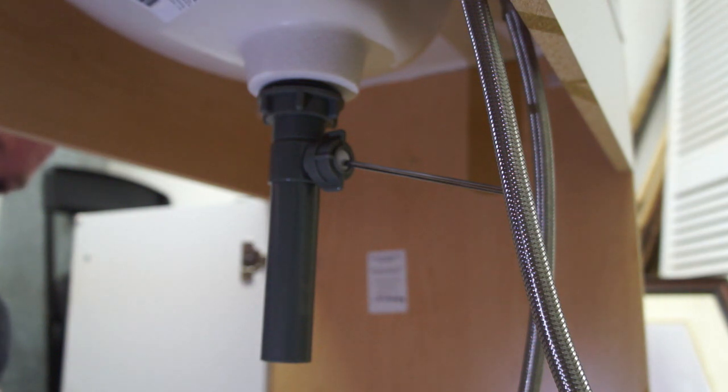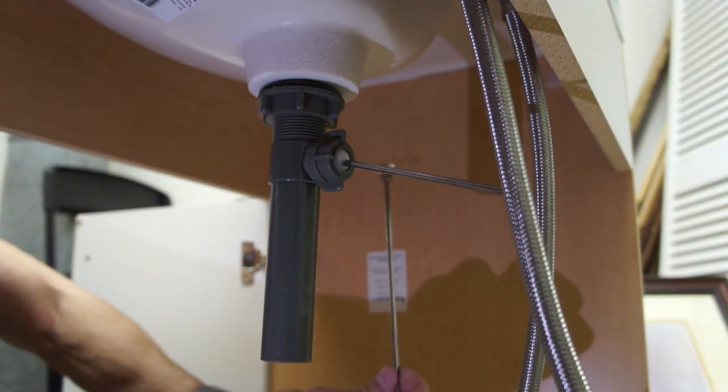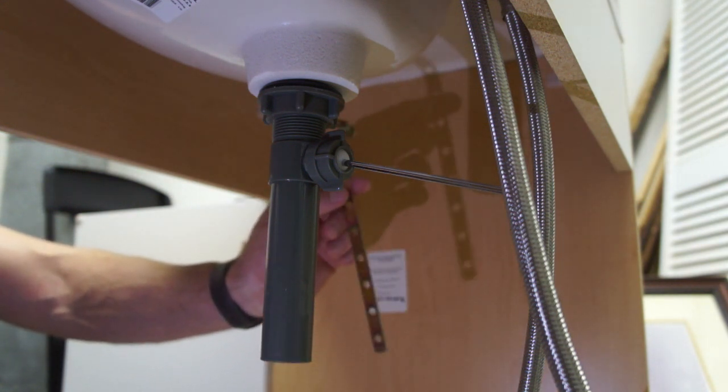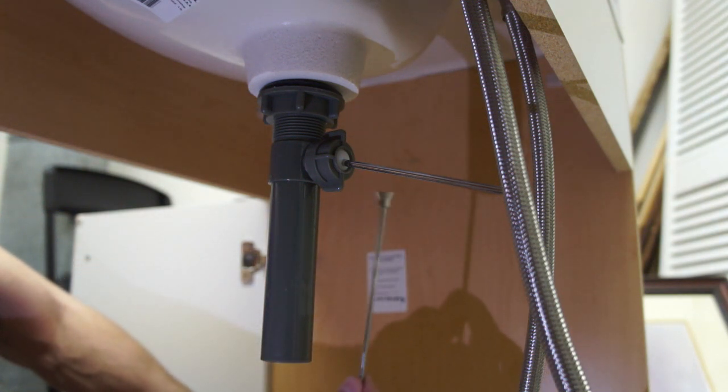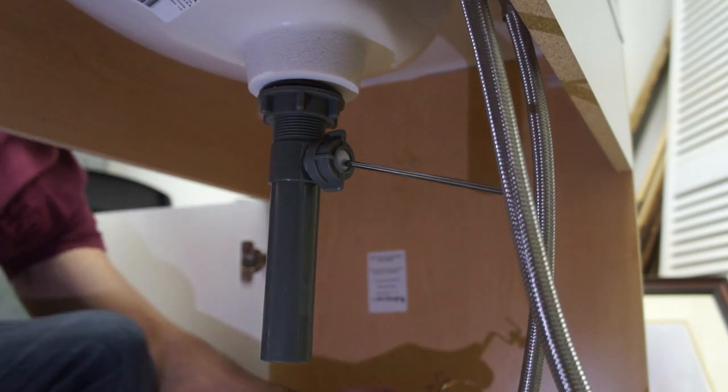Now there's two pieces that connect together to pull the stopper up and down. There's the long skinny one that you see from the top side and then there's the adjustable one with all the holes in it. And that's the side for down here, so you drop the long skinny one in the hole up on top. I'll go ahead and do that first.